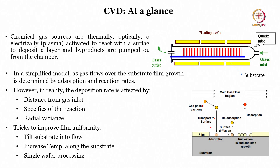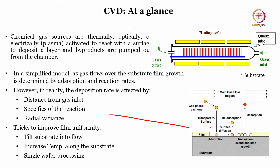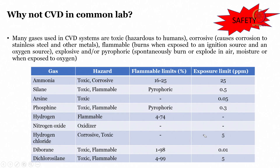In reality, deposition rate is affected by several factors: distance from the gas inlet, specifics of the reactions, and radial variance. Tricks to improve uniformity include: single wafer processing, increasing temperature along the substrate, and tilting the substrate into the flow so that the reaction is better. We will not go deep into the governing equations — I want to give examples of different techniques and then show how to fabricate some devices.